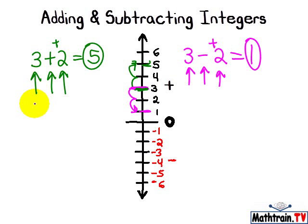Okay, negative 3 plus 2. We start at negative 3. We add 2 positives, so we go 1, 2, and we get negative 1.